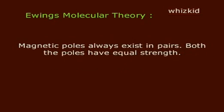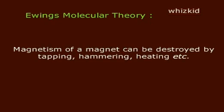Magnetic poles always exist in pairs, and both poles have equal strength. The magnetism of a magnet can be destroyed by tapping, hammering, heating, etc.